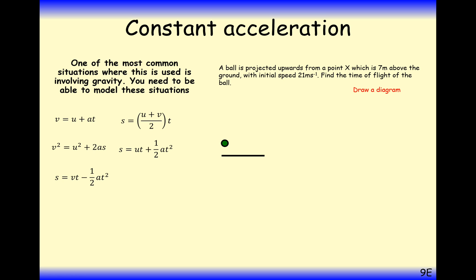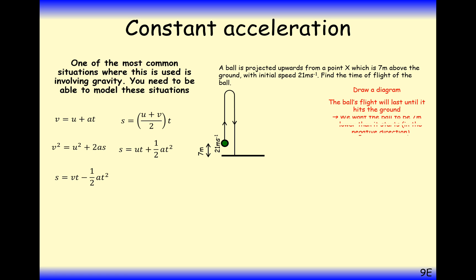A ball is projected upwards from a point X, 7 metres above the ground, with an initial speed of 21 metres per second. Find the time of flight. The particle goes upwards and then back down past where it started, ending at ground level below X. Taking upwards as positive, the displacement S is therefore minus 7 — this is a classic trick used in exam-type questions.